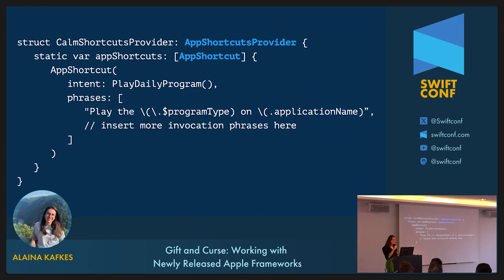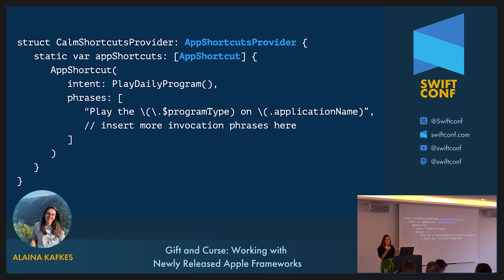Finally, this CalmShortcutsProvider shows how an application can make its App Intents appear by default in the Shortcuts app. AppShortcut describes how an individual App Intent will appear to the user in the Shortcuts app. Now that I've shared a bit of the App Intents code with you, let's hop on the struggle bus together.